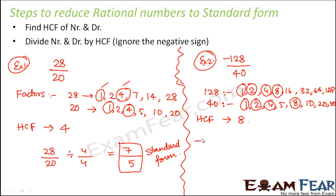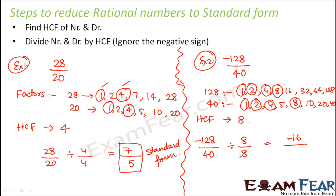We divide the numerator and denominator by 8. Minus 128 divided by 8 is minus 16 — since one number is negative, the result is negative. And 40 divided by 8 is 5, giving minus 16 by 5. The factors of 16 and 5 have only 1 as a common factor, so minus 16 by 5 is in its standard form. This is how we reduce a rational number to its standard form.